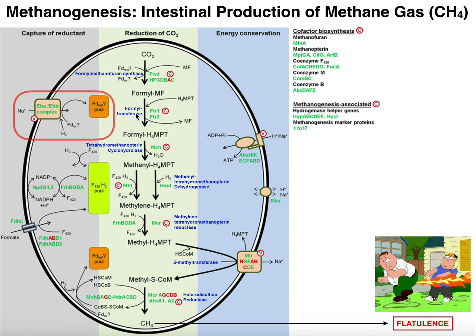We're now going to use a formyl transferase, or a transformylase. This is going to move the formyl group onto tetrahydromethanopterin, removing it from the methanofuran. That comes off and now we have this molecule formyl-tetrahydromethanopterin.